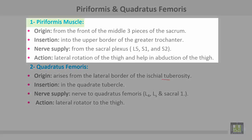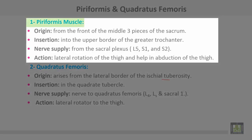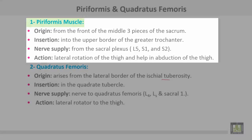Piriformis muscle takes origin from the front of the middle three sacral pieces, inserted into the upper border of the greater trochanter. Nerve supply from the sacral plexus, roots L5, S1 and S2. Action: lateral rotation of the thigh and assists in abduction of the thigh.